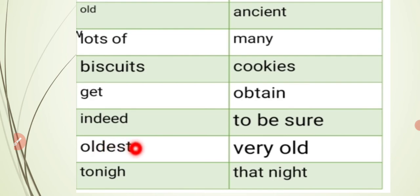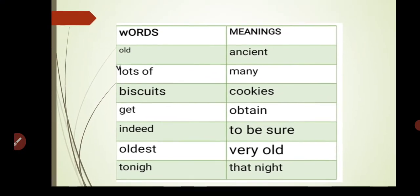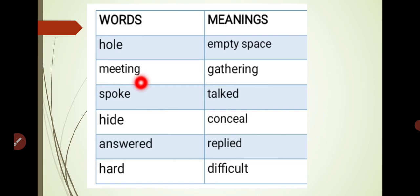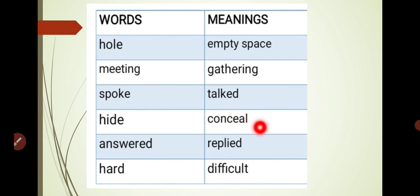Tonight — the spellings are T-O-N-I-G-H-T, meaning 'that night.' Hole — hole means empty space. Meeting — meeting means gathering. Spoke — spoke means talked. Hide — hide means conceal, to hide yourself. Answered — answered means replied. Hard — hard means difficult.